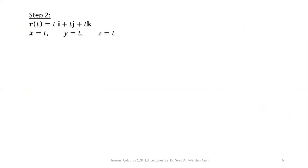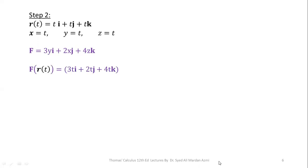In step two, we calculate the values of x, y, and z from r(t). The coefficient of i gives x, the coefficient of j gives y, and the coefficient of k gives z. So we have x equals t, y equals t, and z equals t. We then substitute these values into the vector field function F. So F(r(t)) equals 3t·i plus 2t·j plus 4t·k.